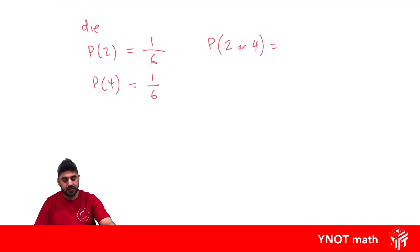So this is the same thing as getting the probability of a 2 plus the probability of getting a 4. We just worked out the probability of getting a 2, that's 1 out of 6, and we just worked out the probability of getting a 4, which is also 1 out of 6. Here we've got two fractions with the same denominator, so we just add the numerators to get 2 out of 6.